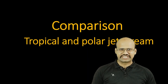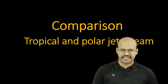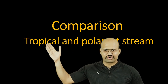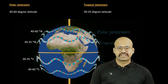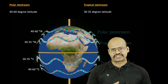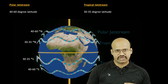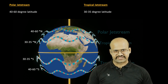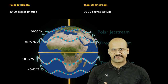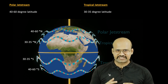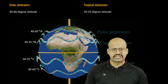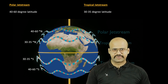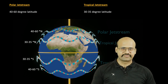Hello friends, welcome to Zeta Axis. Today we will discuss a comparison between tropical and polar jet streams. We know that there are four jet streams on Earth: two polar and two tropical jet streams. Now even though both the tropical and polar jet streams are generated by similar processes, there exist some differences between them.